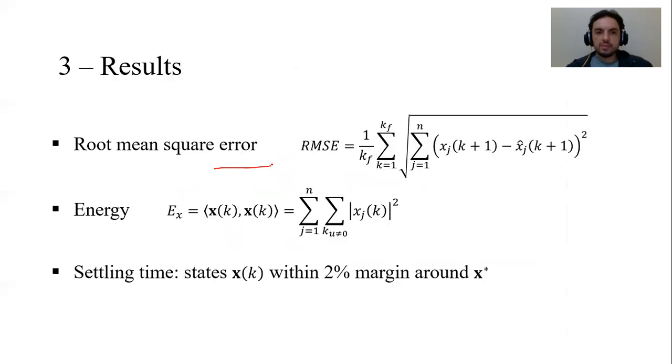We evaluate the results using the root mean square error and the energy that is dissipated from the closed loop system, and the settling time, which means the convergence of the states to the point in a 2% margin around the point we wanted to converge.